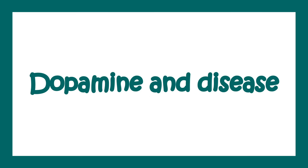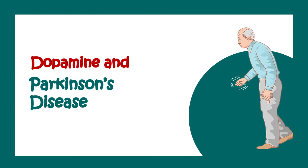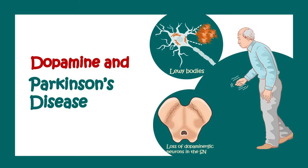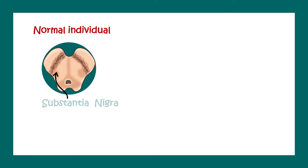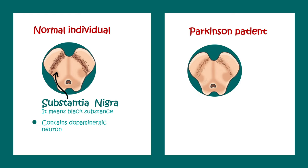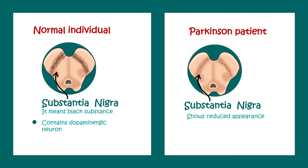When we talk about dopamine and disease, the first thing that comes to mind is Parkinson's disease. The key pathological symptom is the death of dopaminergic neurons in the substantia nigra. In a normal individual, the substantia nigra appears as a black band due to the presence of neuromelanin — literally meaning 'black substance.' In Parkinson's patients, the substantia nigra is reduced in appearance with massive cell death.